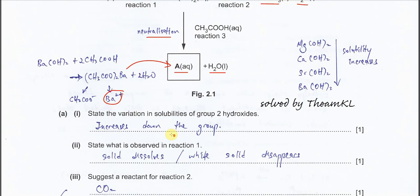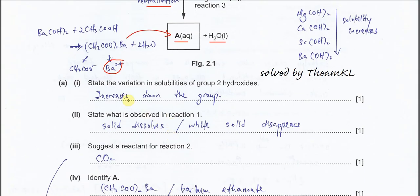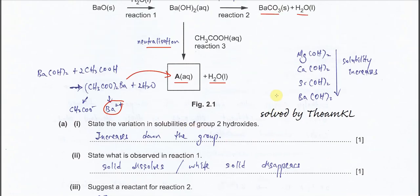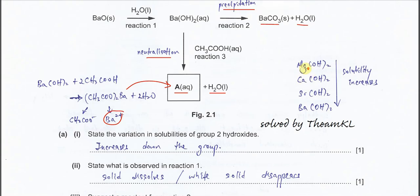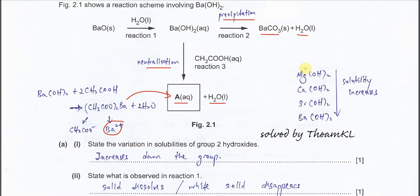Now let's move on to Part A1: state the variation in solubilities of Group 2 hydroxides. In AS you need to understand and memorize the trend. In order to explain the solubilities of Group 2 hydroxides, you need to use lattice energy, which is not in AS. So in AS you just need to memorize the trend: down the group, solubility increases.